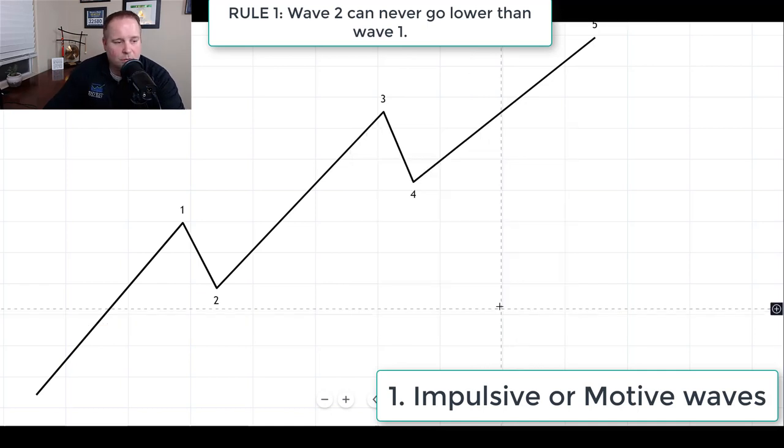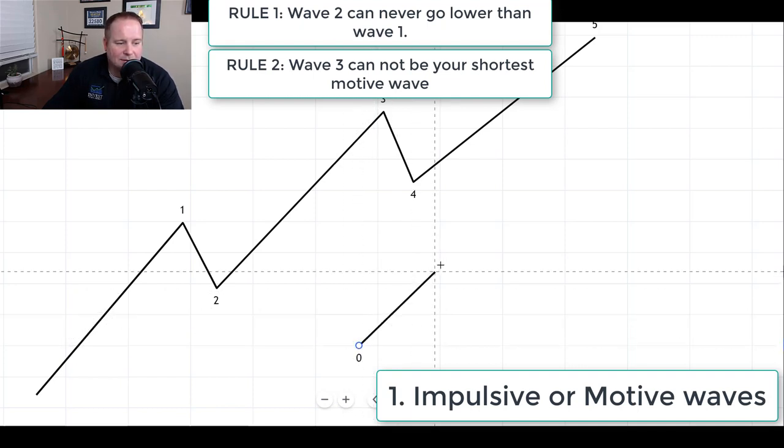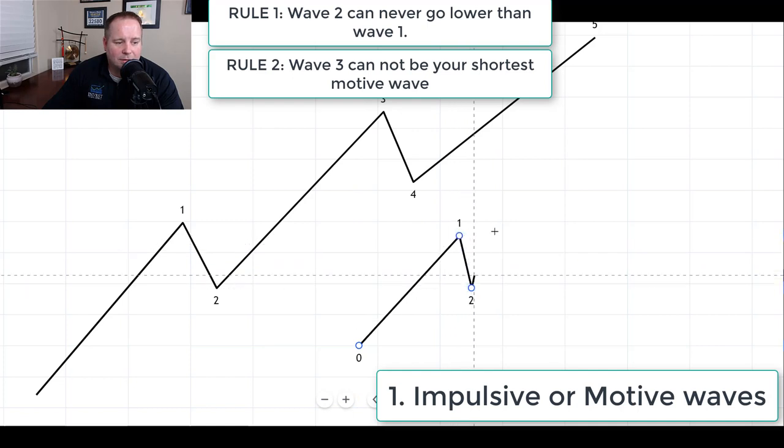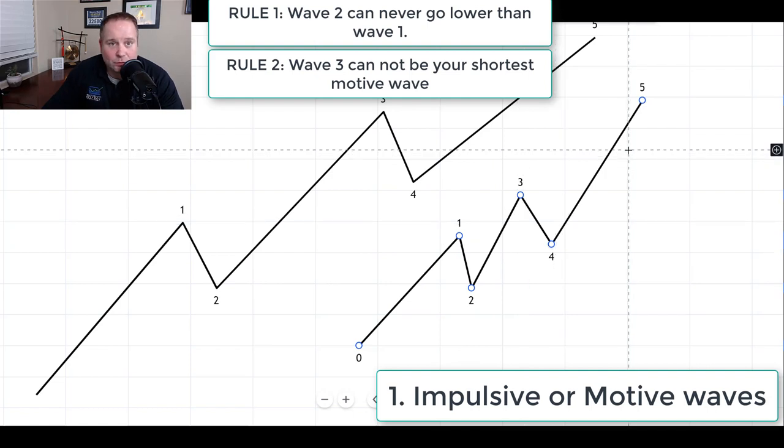The second rule is that wave three cannot be your shortest motive wave. So out of waves one, three, and five, three cannot be your shortest. So if you're looking at a five wave pattern and it looks like this, where you have one, two, three, four, five, that is not a valid Elliott wave because wave three is the shortest out of one, three, and five. So that's rule number two.